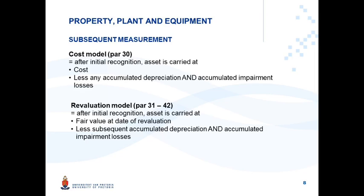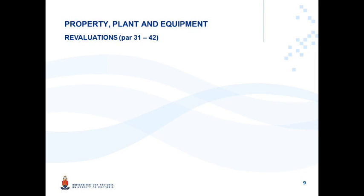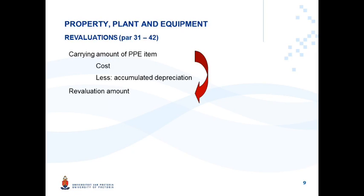In summary, for subsequent measurement there is a choice between the cost model and the revaluation model. All PPE items are initially measured at cost less subsequent accumulated depreciation. You can only revalue PPE if you have a fair value — if you cannot determine fair value, you cannot revalue. You revalue when your carrying amount significantly differs from what fair value would be. Paragraphs 31 to 42 deal with revaluations: the carrying amount consisting of cost less accumulated depreciation must be restated to the revalued amount.